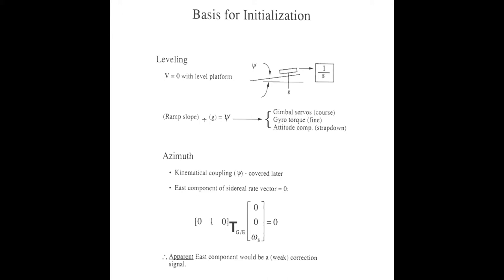Suppose our 1g computation was based on an imperfect perception of which way is down. Then there will be a small unwanted projection of indicated net acceleration in a horizontal direction, causing our computed velocity to ramp up in that direction even though there's no motion. The slope of that ramp in each direction (north and east) is gravity multiplied by a tilt angle. So we repeatedly adjust the attitude — we untilt it — until the ramping goes away. That can get leveling correct to within a few tenths of a milliradian. Not perfect, because accelerometer error can typically be a few tenths of a milli-g. The next task is to establish north direction.